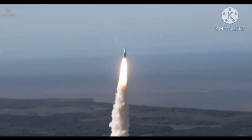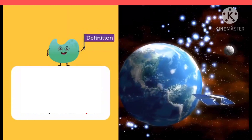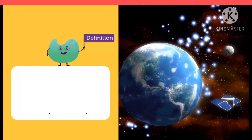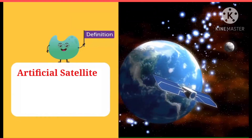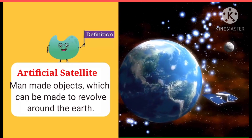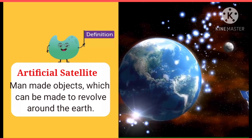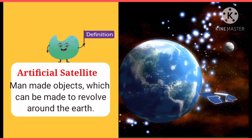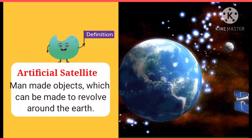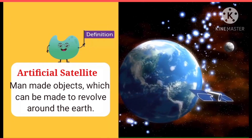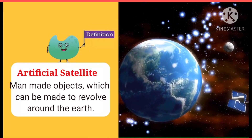Now we will talk about artificial satellites. These are man-made objects which can be made to revolve around the Earth. They are, however, much closer to the Earth than the Moon.